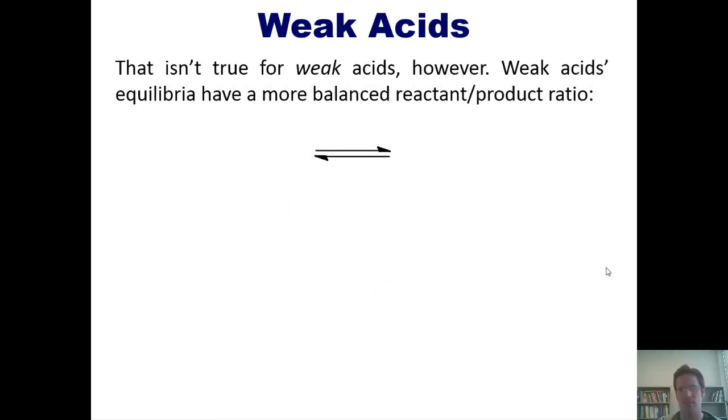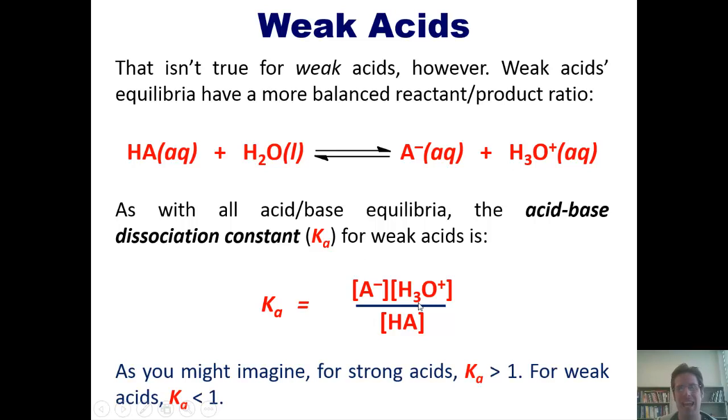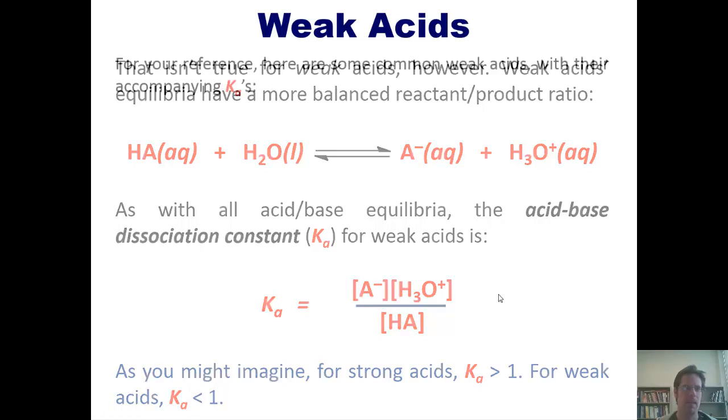Now, that isn't true for weak acids. Weak acids equilibria have a more balanced reactant-to-product ratio than strong acids. As with all acid-base equilibria, the acid-base dissociation constant, or Ka, for a weak acid is this. Notice, of course, that we always omit any liquids or solids on either side of the reaction. Now, as you might imagine, for strong acids, Ka is larger than one. And the reason is because you have virtually all product and very, very tiny amount of reactant. While, as for weak acids, Ka will be less than one because it will be the reverse.